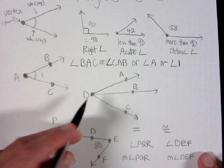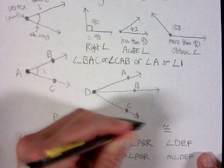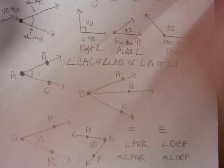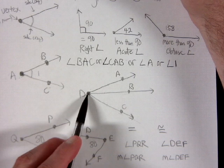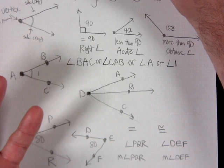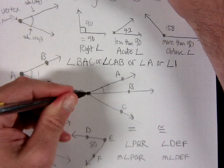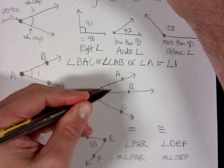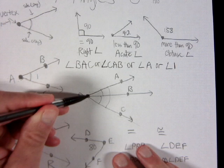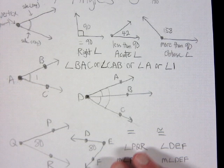Now let's look at a diagram with one point and three rays drawn out of it. This illustrates why it's important to use three letters. If I just say 'angle D,' there are several different angles with vertex D and you wouldn't know which one I mean. So in this diagram, we must use three letters to name the angle.